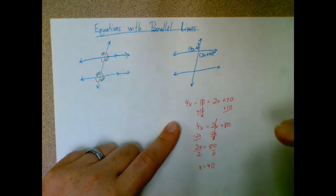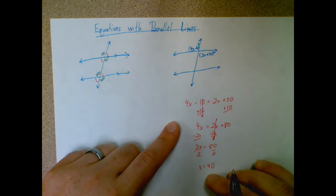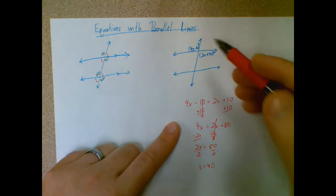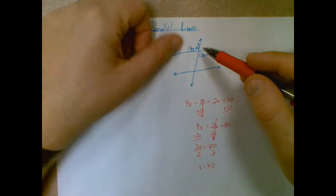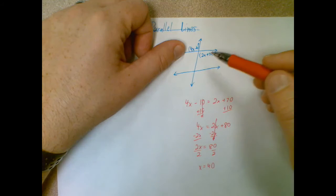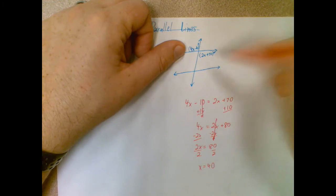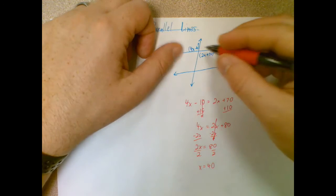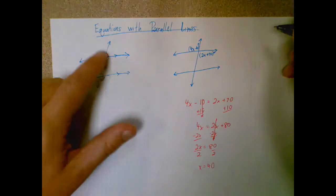Now be careful, in Algebra 1 you would stop when you found x most of the time. In Geometry, that's not necessarily the case. Looking up here, I want to actually figure out how big these angles are, so I'm going to take that x and plug it back into both of them. Hopefully, if we did this correctly, they're going to both be the same thing because they're both green angles.